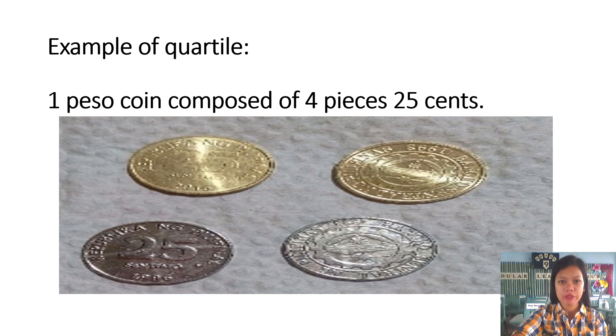We have another example of quartile: the four pieces of 25 centavo coin to make it one peso coin, which means one peso is divided into four equal parts.